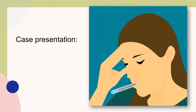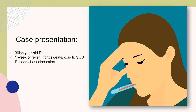For this month's Critical Care Ultrasound Case of the Month, we're going to discuss a case my colleague had. She was a 30-ish year old female who presented to the emergency department with one week of fever, night sweats, cough, and shortness of breath. She had some right-sided chest discomfort. She had a history of COVID six months ago, otherwise no significant past medical history.